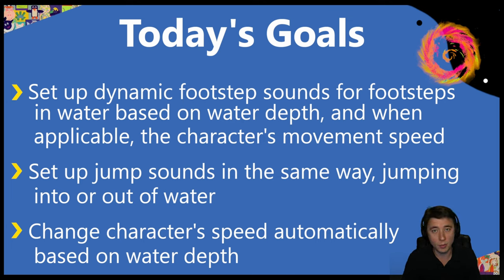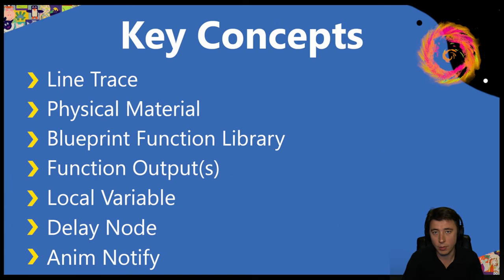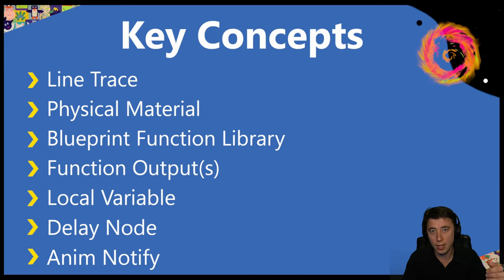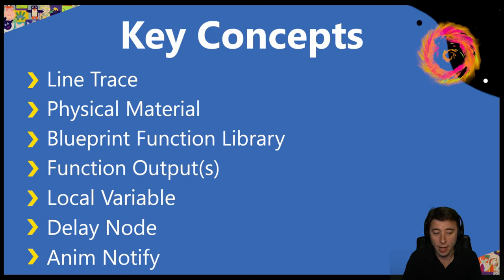Here are the key concepts for this episode. Most we covered last episode, but we're building on what we learned. We're doing a new kind of trace — a line trace — to get the water level, which we'll compare against the sphere trace ground level from last episode. New things this episode include functions with outputs and the delay node. Delays are something you'll use all the time and are very simple to get started on.